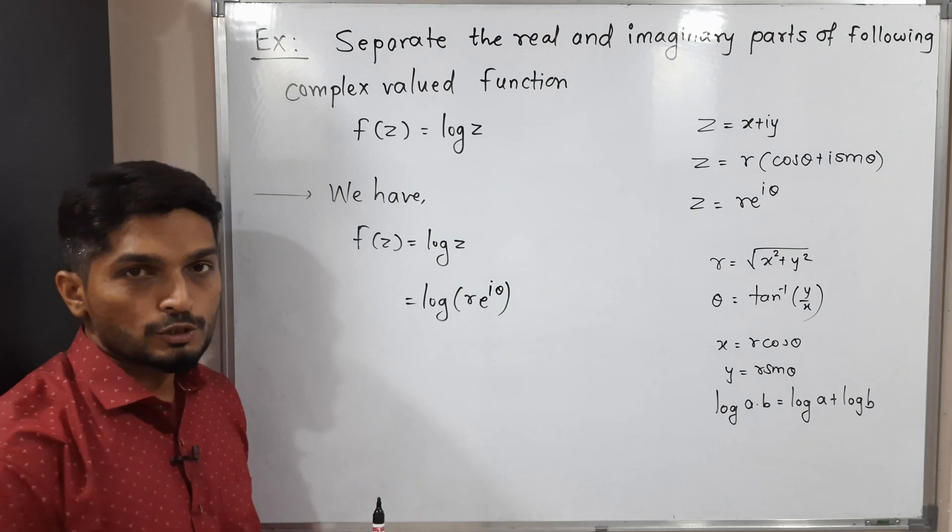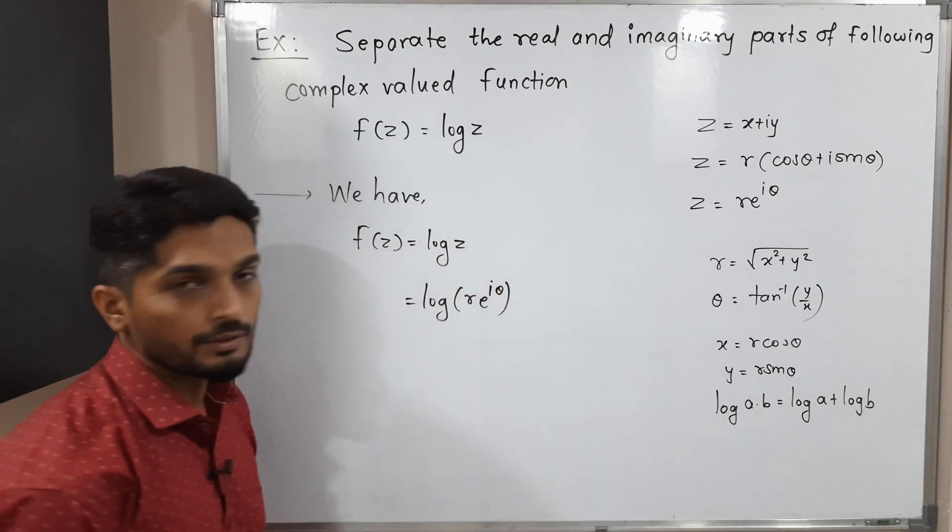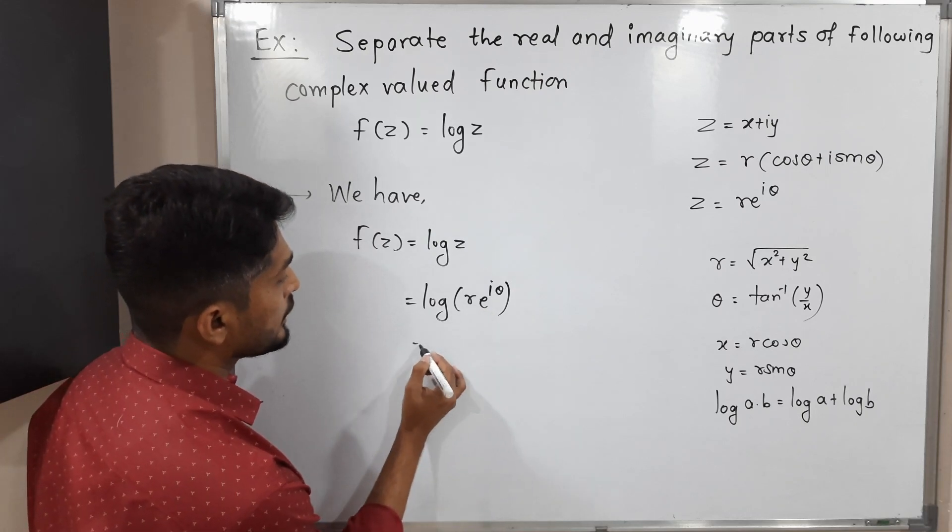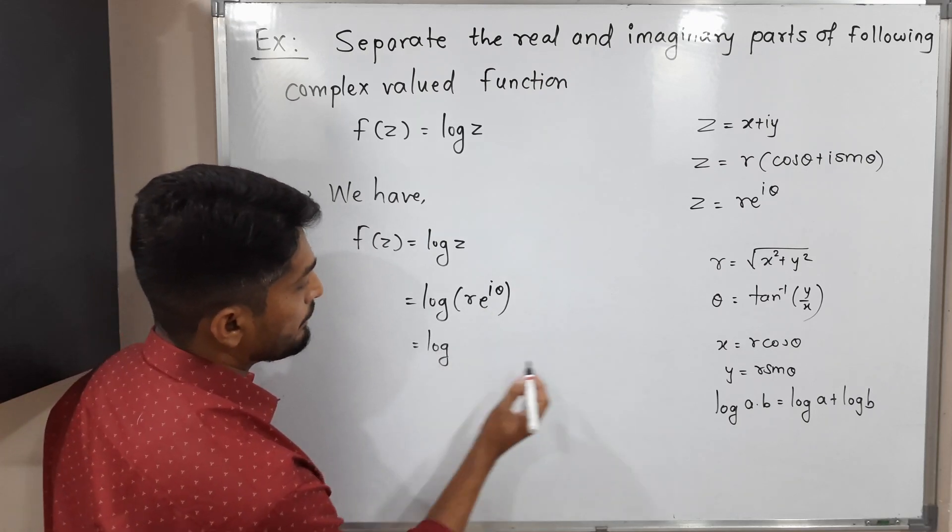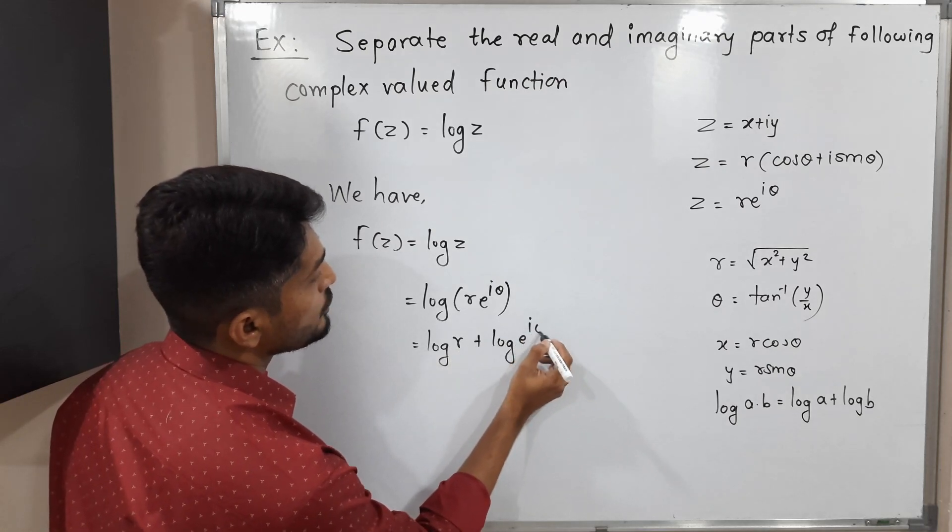If there is a multiplication, we can write them separately. Simply we have to write addition there. Here also I will do the same. There is a multiplication, so we can use that property: log r + log(e^(iθ)).